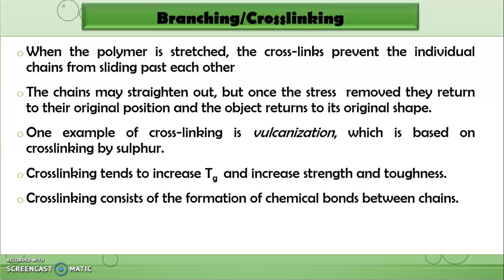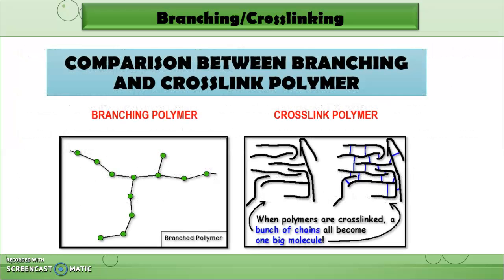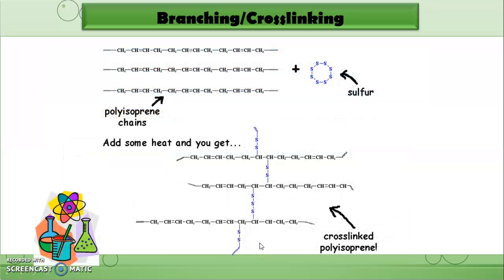Cross-linking tends to increase Tg and increase strength and toughness. Cross-linking consists of the formation of chemical bonds between the chains. For example of branching and cross-linking structure, cross-linking is more complicated than branching. When polymers are cross-linked, a bunch of chains all become one big molecule. This is the structure for polyisoprene. This is the raw cis-1,4-polyisoprene. When adding sulfur, it will become a cross-linked polyisoprene.